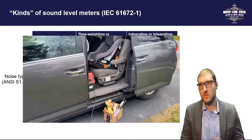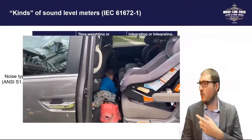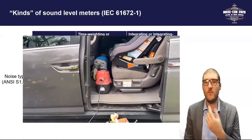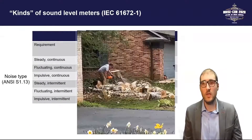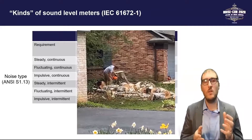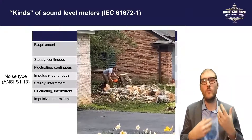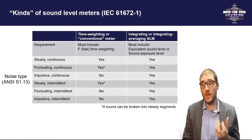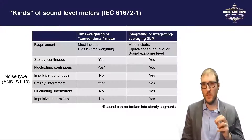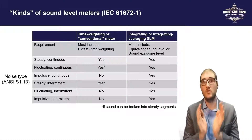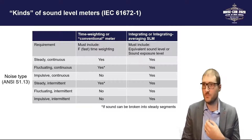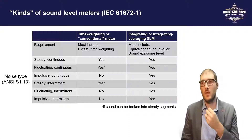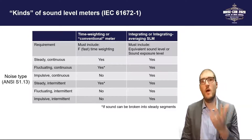A more difficult sound to measure is a fluctuating sound — like a vacuum picking up different kinds of debris — where noise output varies as a function of time. Even more extreme is a chainsaw, where the sound level varies with load and has periods of being totally off. You can measure these with a conventional meter but must carefully break the sound into segments that can be considered steady, per ANSI S1.13. Wherever possible, I'd recommend getting a meter that does both: an LEQ measurement and a fast time weighting measurement.